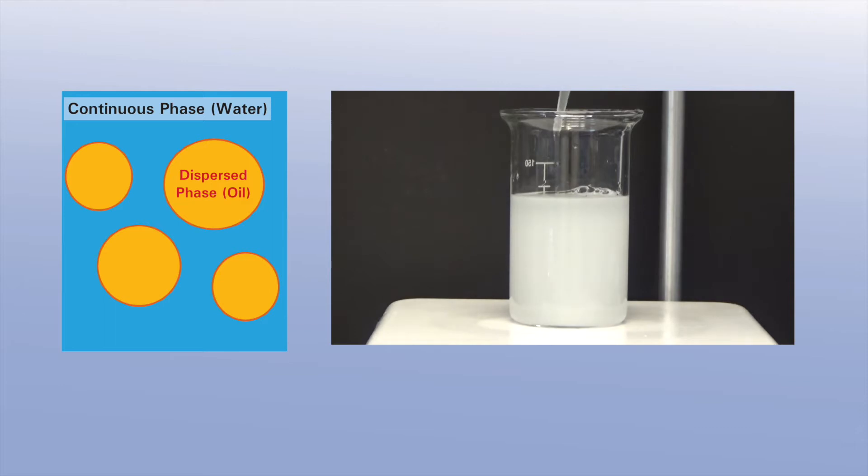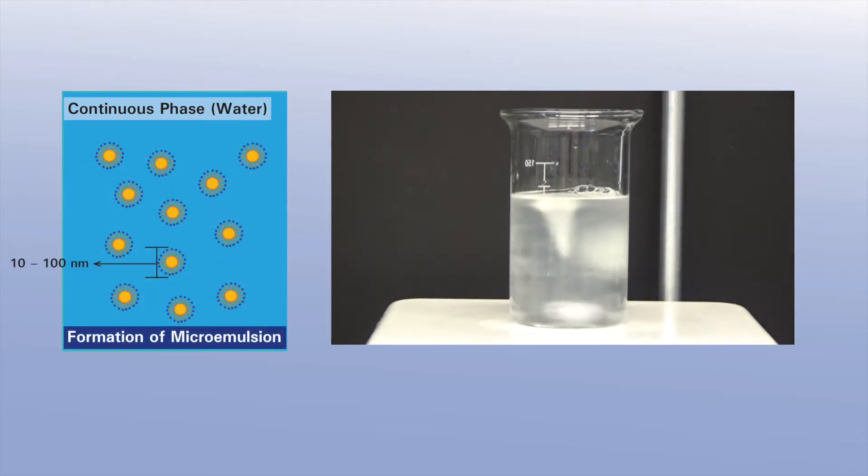Microemulsions are mixtures of immiscible liquids such as water and oil in combination with surfactants. These compositions are thermodynamically stable and optically transparent.